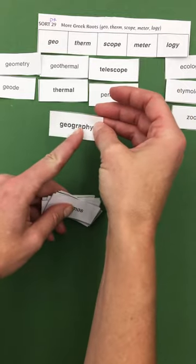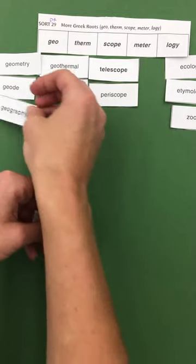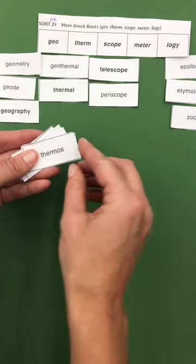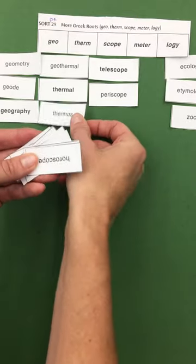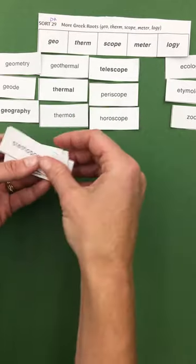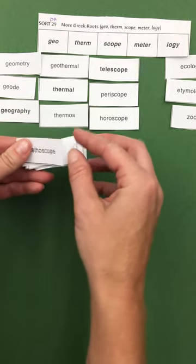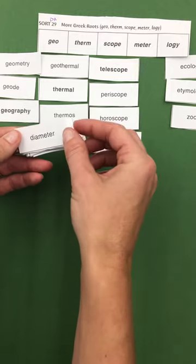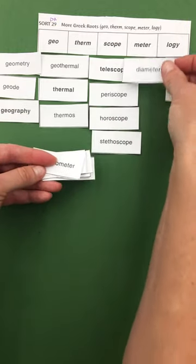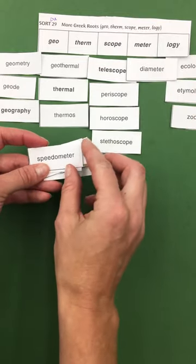Oh, do you see the graph in this word? Remember what that means? Thermos. Horoscope. Oh, my words are all over the place. Stethoscope. Diameter. I'll put it right there. Speedometer. Got a meter in there.